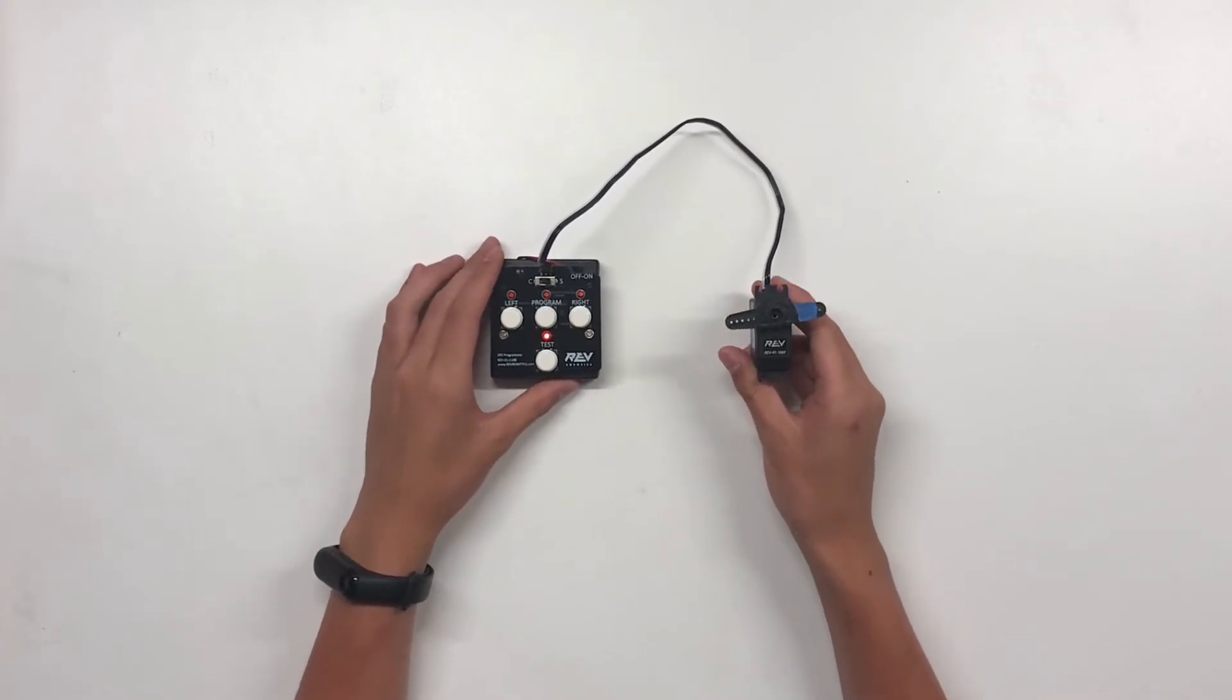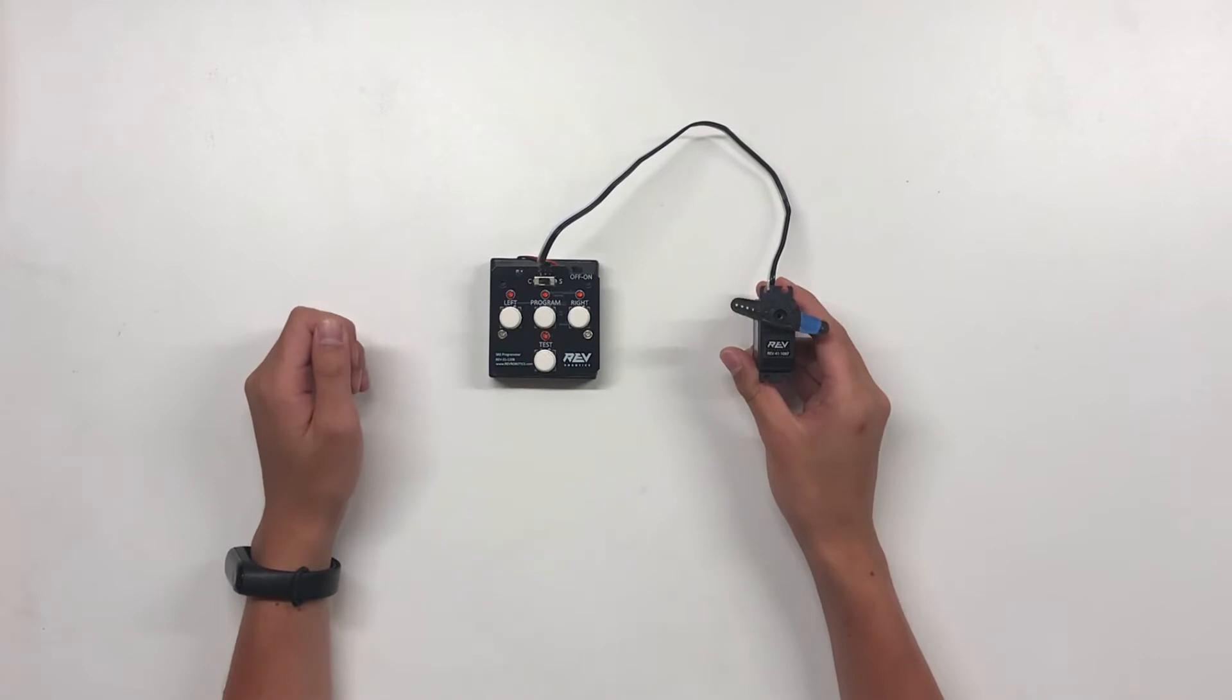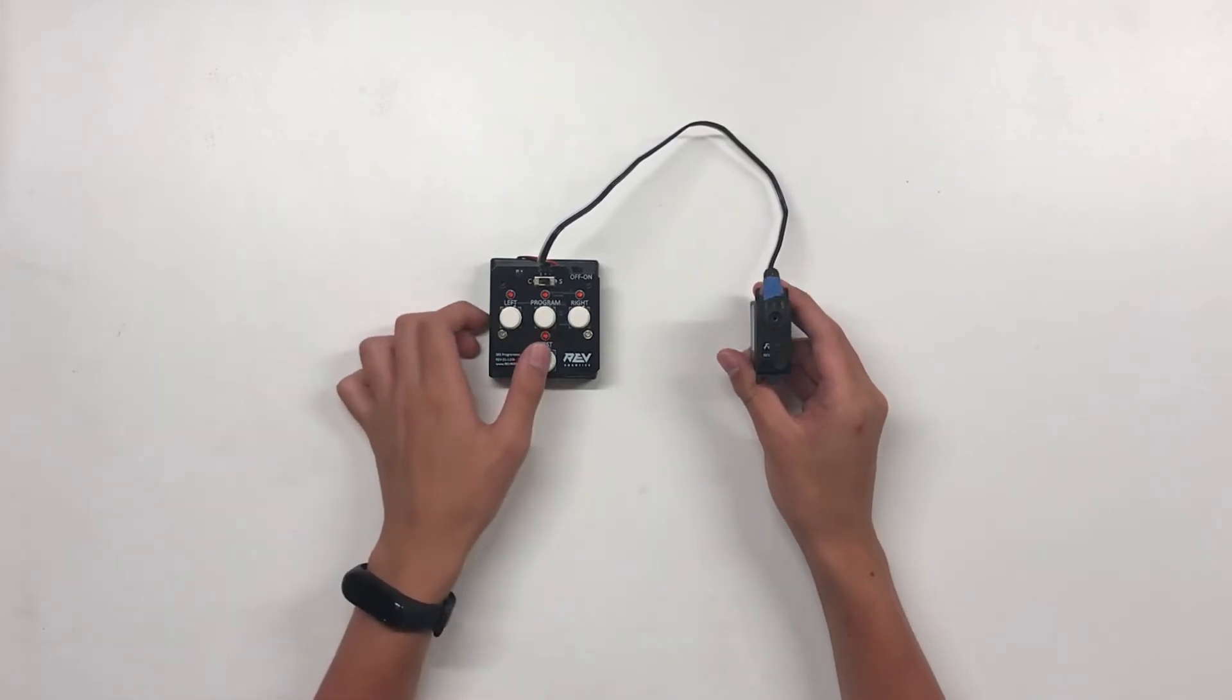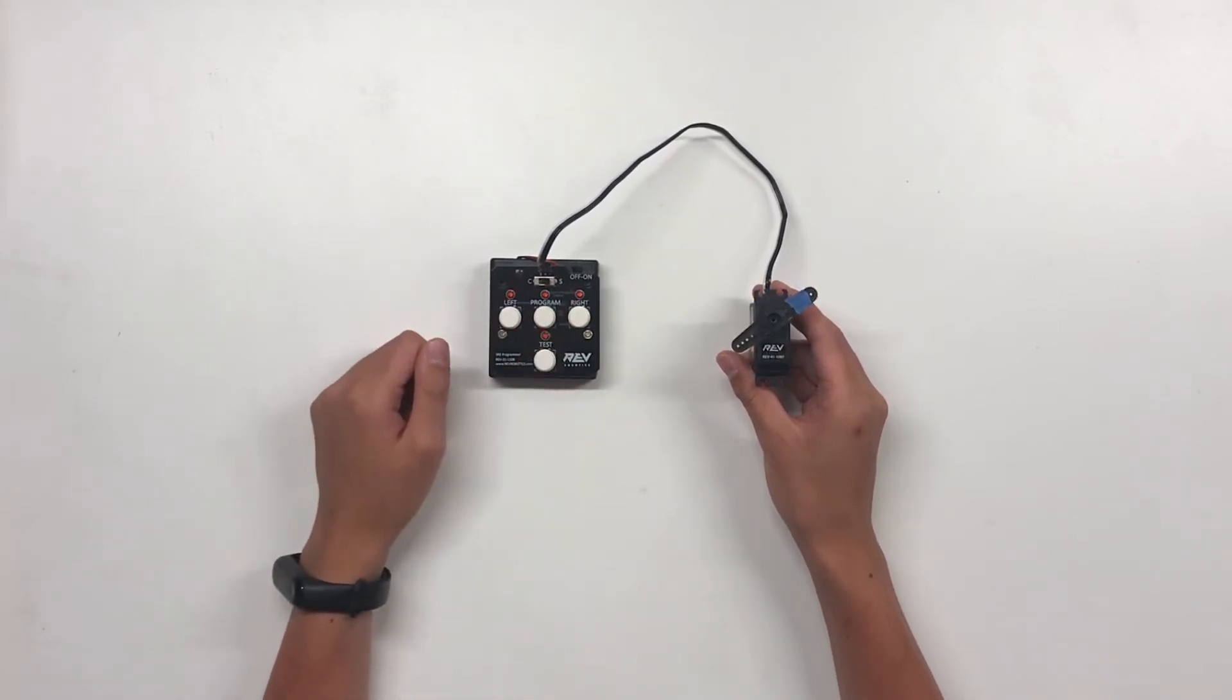This will make the servo move, so be careful not to get hit. The test will make the servo go to the limits on both sides of the servo. If you want to show one limit or the other, hit the test button once more and select which side to run to. Press the test button once more to bring it back into the default mode.